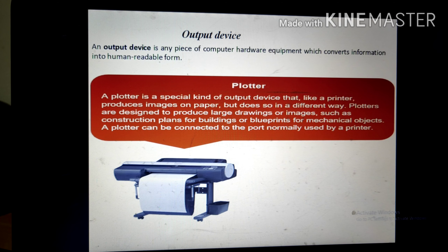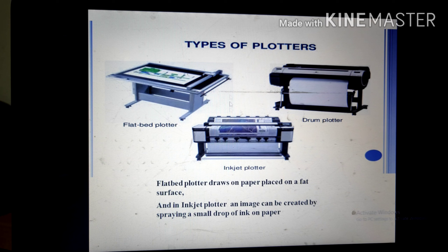Here is the picture of a plotter. The first type is a drum plotter, which draws on paper wrapped around a drum that turns to produce one image. The next is a flatbed plotter, which draws on paper placed on a flat surface. The last one is an inkjet plotter, where an image is created by spraying small drops of ink on paper.